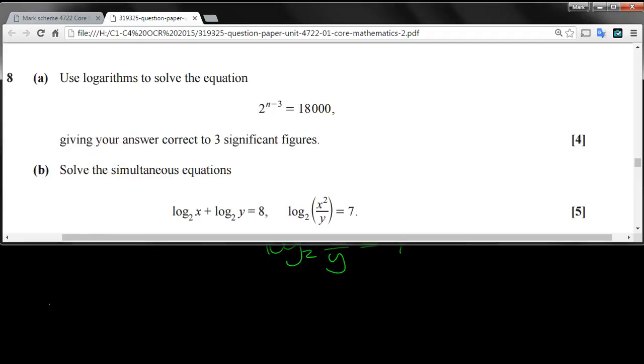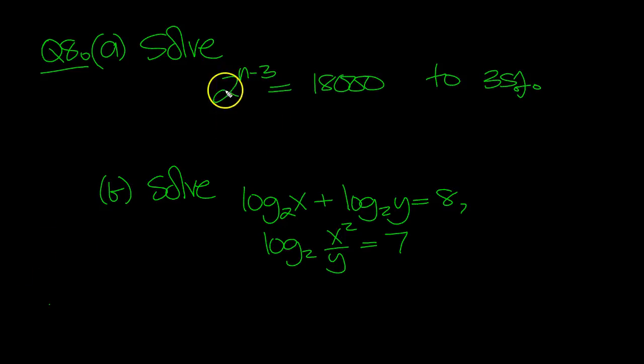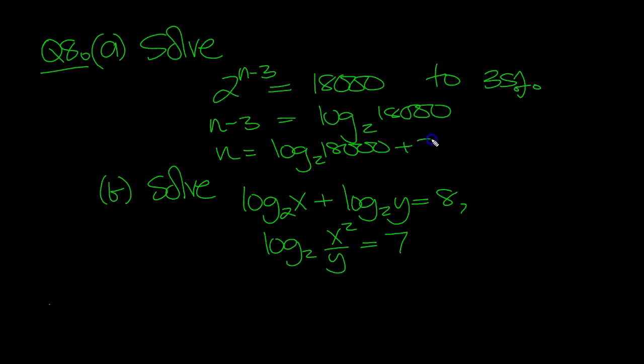Question 8. Let's have a look at this. Here just swing the 2 down, n minus 3 drops down and then it's log 2 of 18,000. So n is equal to log 2 of 18,000 plus 3.